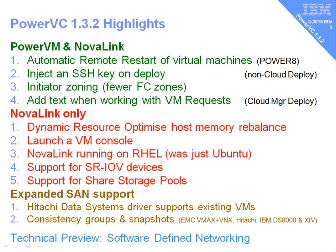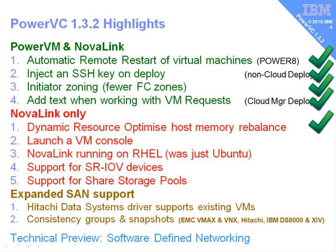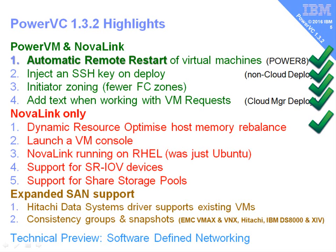I think the first five items are the most important and we'll be covering those in more detail in the rest of this video. From the top: number one is automatic remote restart — a very powerful feature where if a machine goes down, virtual machines are automatically removed and restarted on other machines in PowerVC. Number two is injecting an SSH key on deployment, so we can put a certificate into a deployed virtual machine securely without using an unsecured method later.